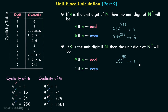So 199 raised to power 90 will have 1 at the unit place. Similarly, if we have 199 raised to power 91, then this will have 9 at the unit place because 91 is odd, and when we have odd power, 9 is the digit at unit place.